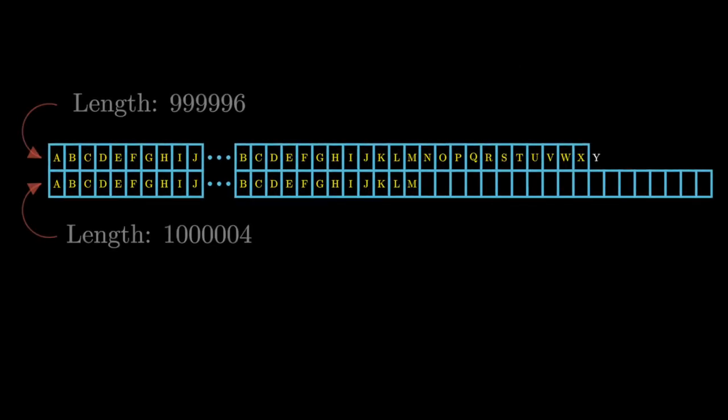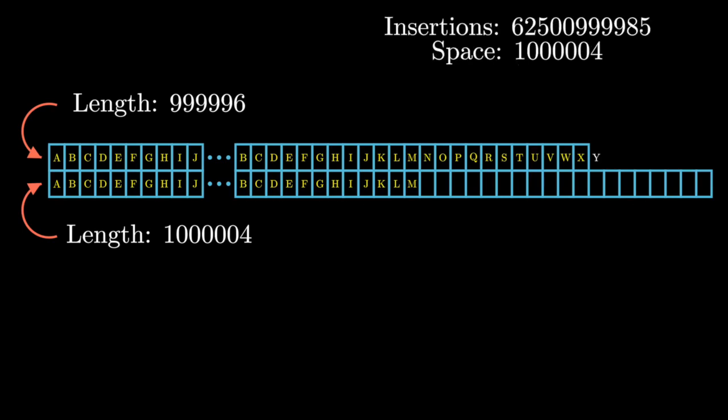And for 1 million elements, we have about 62.5 billion insertions and 1 million 4 units of space.